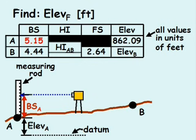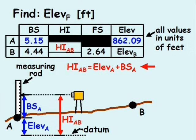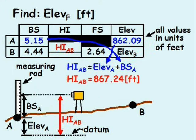As mentioned before, the height of the instrument HI_AB is the vertical distance between the datum and the elevation of the line of sight. Now we can compute the height of instrument AB as the elevation at point A plus the back sight reading at point A, which equals 867.24 feet.